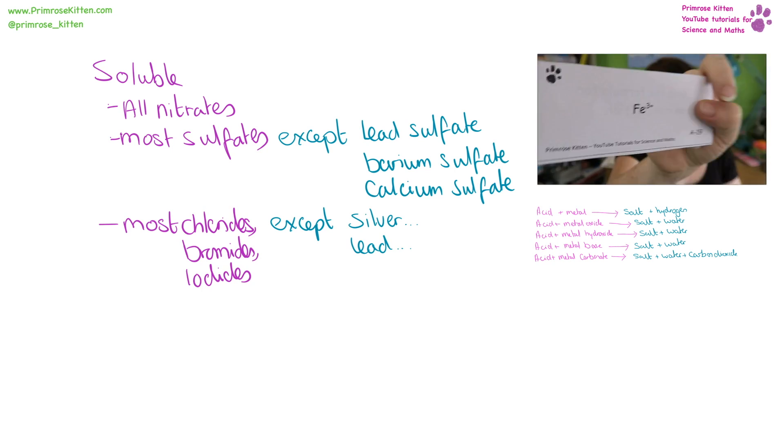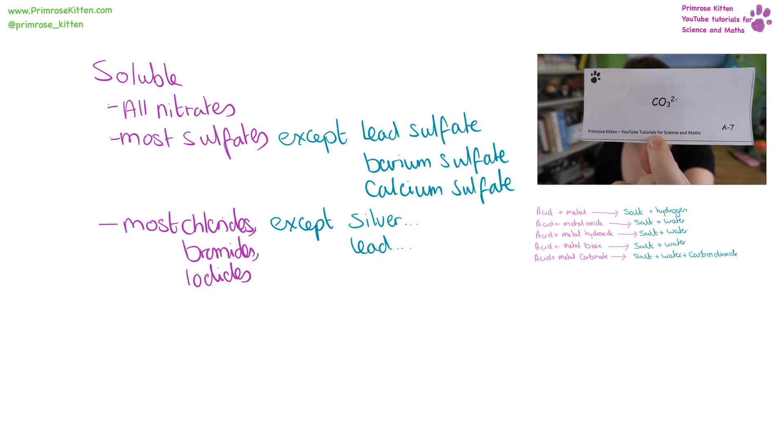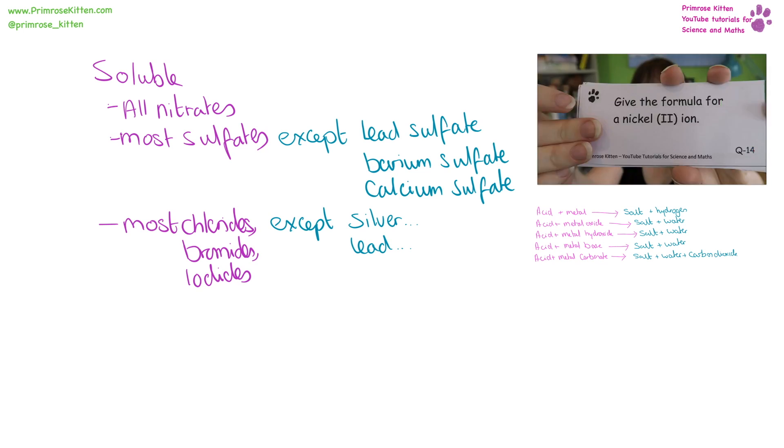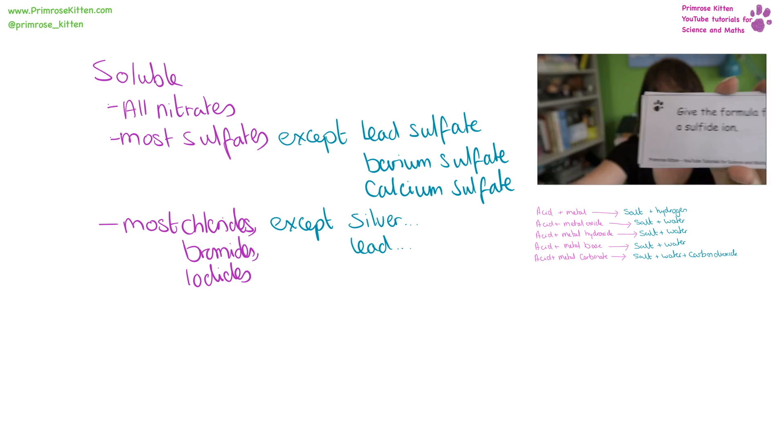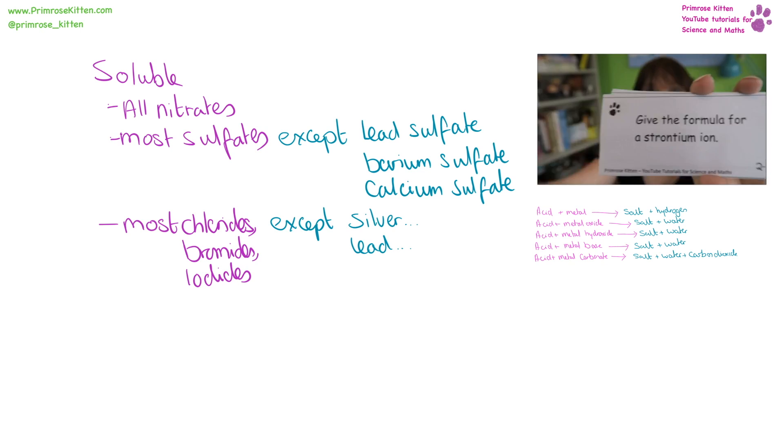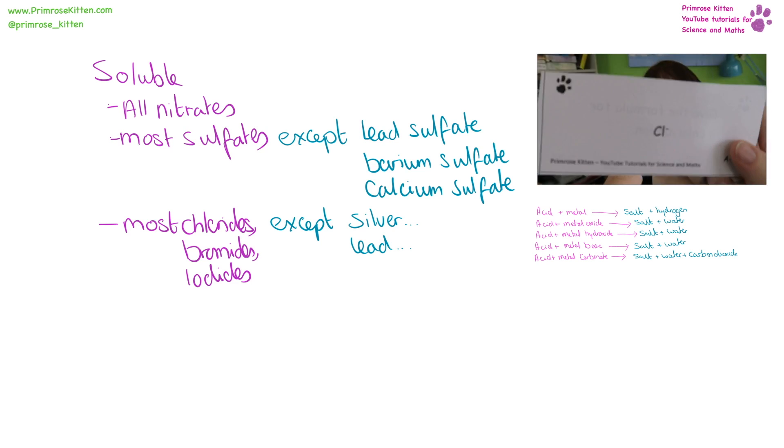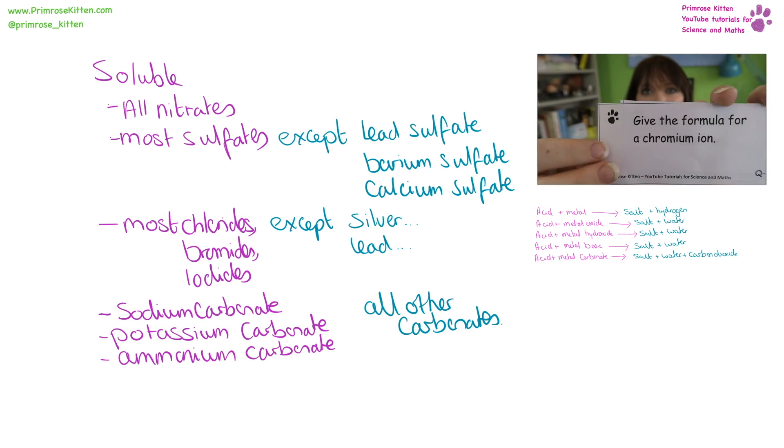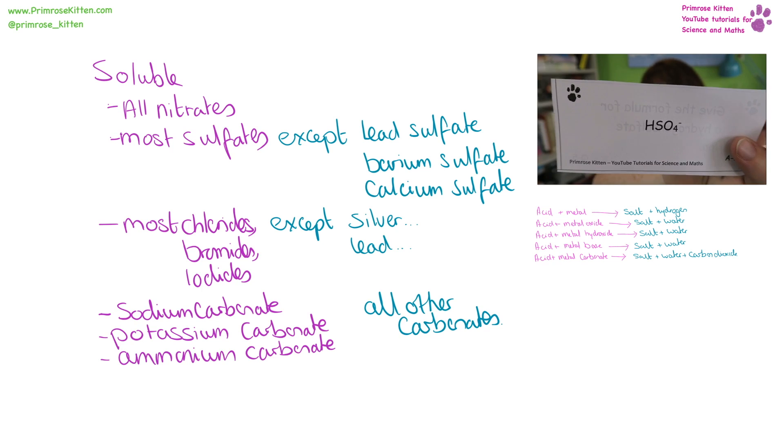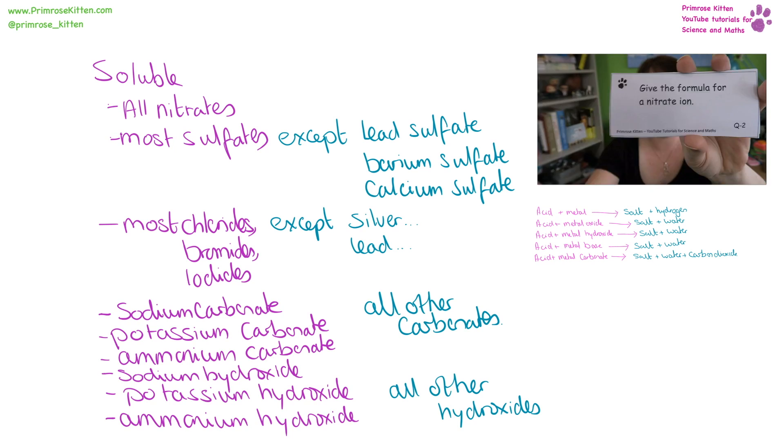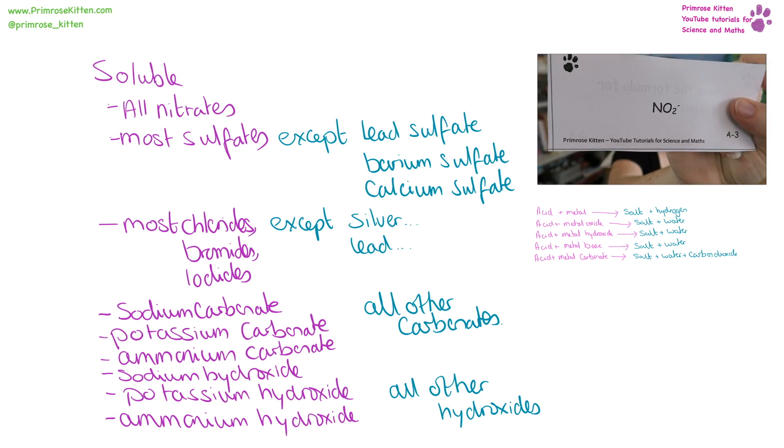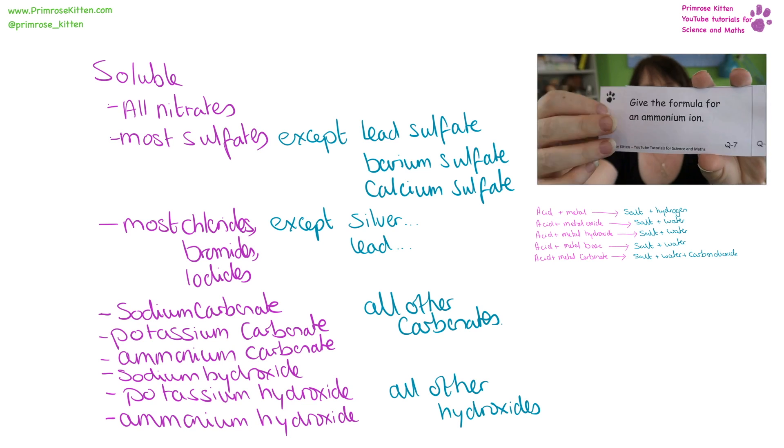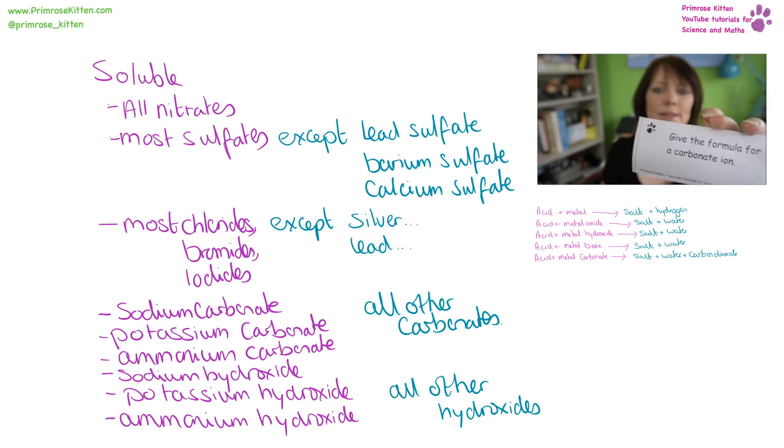Most halogen compounds, so most chlorides, bromides, and iodides are soluble, except when they're combined with silver or lead. So for example, silver chloride, silver bromide, silver iodide are insoluble; lead chloride, lead bromide, and lead iodide are insoluble. Sodium carbonate, potassium carbonate, and ammonium carbonate are soluble. All other carbonates are insoluble. Sodium hydroxide, potassium hydroxide, and ammonium hydroxide are soluble. All other hydroxides are insoluble.